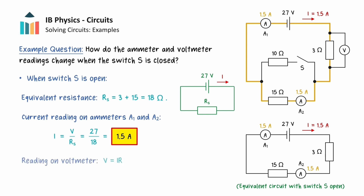The reading on the voltmeter will be the potential difference across the 3 ohm resistor, which can be calculated by finding the product of the current and the resistance, giving a value of 4.5 volts.